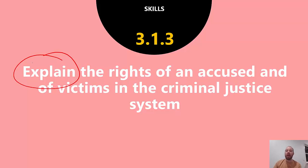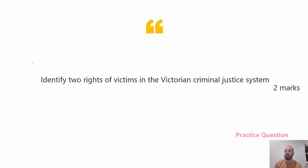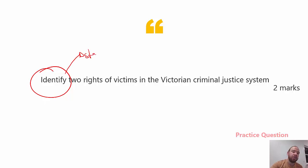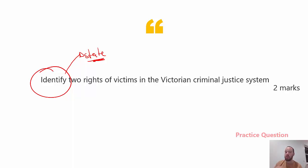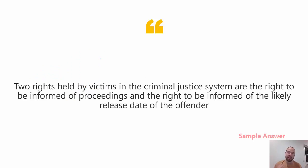Our key skill is to explain the rights of an accused and of victims. I want to address a simpler task word: identify. We don't really get identify questions on exams anymore since 2018, but with a new study design, you never know. If you see an identification question, all you need to do is make a statement — you do not need to provide any extra detail. For example: 'Two rights held by victims in the criminal justice system are the right to be informed of proceedings and the right to be informed of the likely release date of the offender.' Name the content and move on.